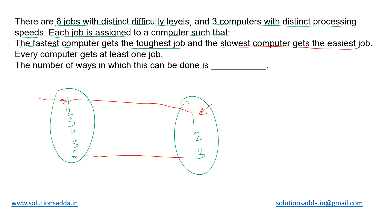Now we have four jobs left and one computer left. What we need to do is assign every job to a computer such that each computer gets a job — no vacant computer — and also no job is left unassigned. Each job gets a computer and no computer is left unused. So what is the number of ways of achieving this?